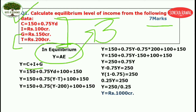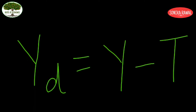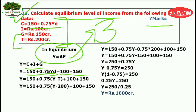Simply substitute the consumption value: 150 plus 0.75 Yd, investment is 100, and government expenditure is 150. Now you see the term Yd — Yd is your disposable income, and the formula for Yd is Y minus T, that means income minus your taxes.